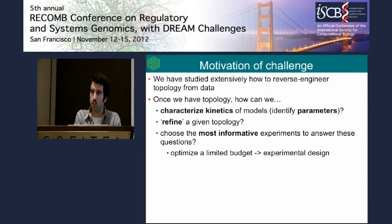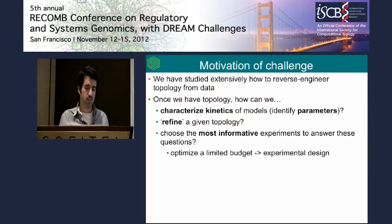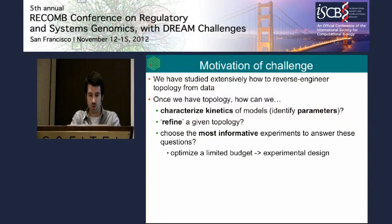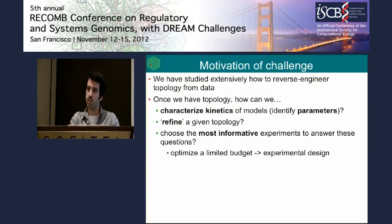So why do we do this challenge? Those of you who have been following DREAM will know that for many years there were a lot of challenges about network inference. In fact, the word DREAM stands for Dialogues in Reverse Engineering Assessments of Methods. We have studied how to get the topology from the data, and we thought for this challenge we could go one step further and try to answer the question: if we know the topology reasonably well, can we take a mechanistic model and characterize the kinetics — that is, identify the parameters that underlie the model?